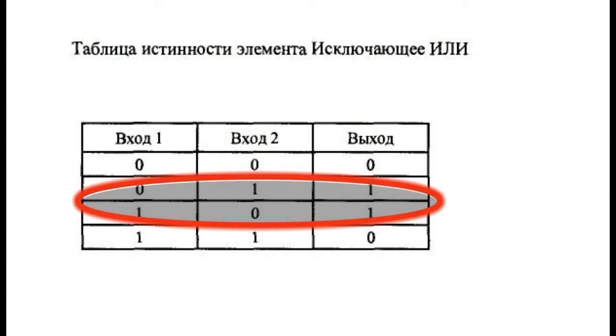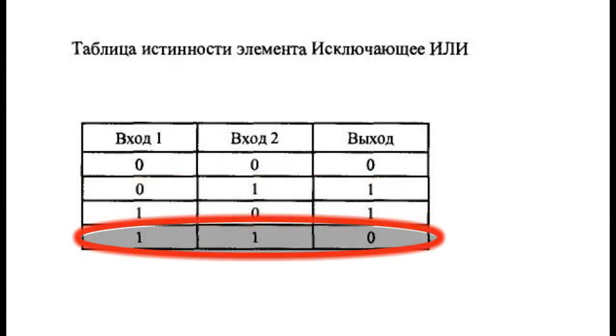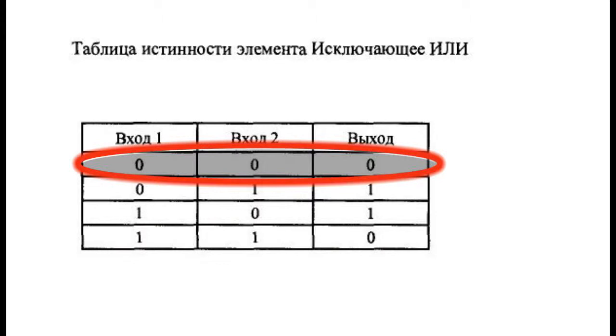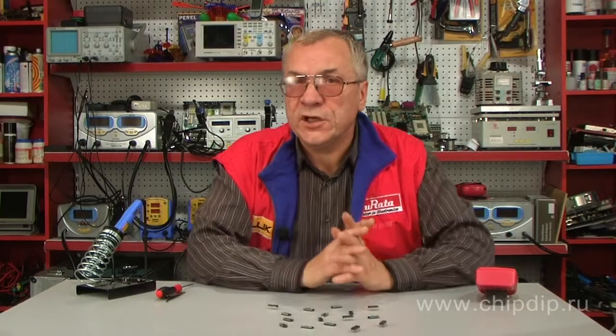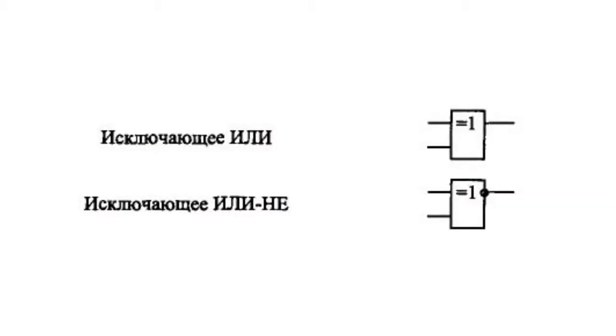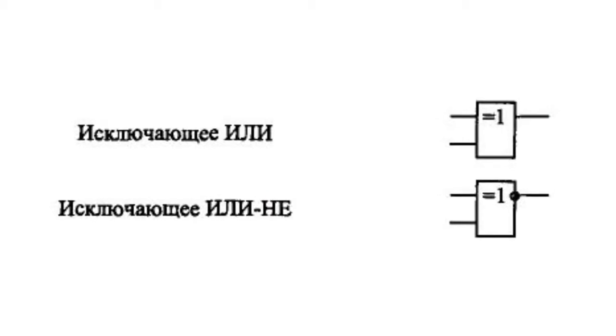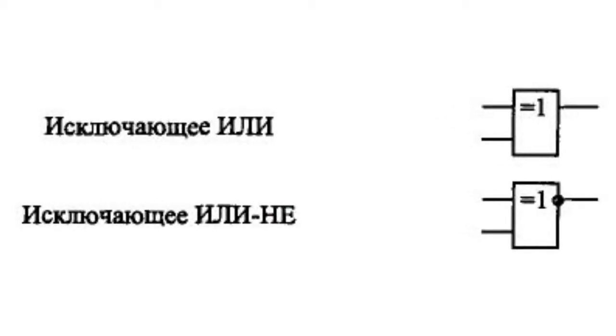Exclusive OR gates are not often used in practice. An exclusive OR gate, or exclusive disjunction, means the following: the output of an XOR gate is equal to 1 if either input has a value of 1. If both inputs are 1s or both are 0s, the final output will be 0. Exclusive OR equal to 1 specifically denotes the situation where only one input contains a 1.